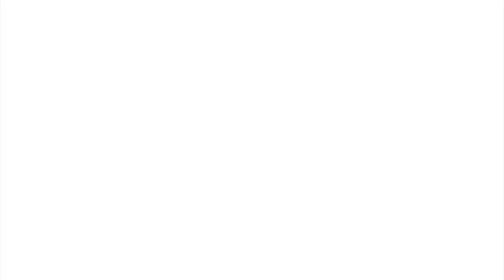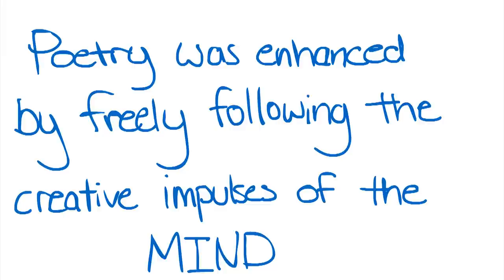A majority of the literature movement can be divided into English and German writings. English Romantic writings favored poetry and believed that it was enhanced by freely following the creative impulses of the mind. This now redefined poetry, thought to be merely an exercise of the mind, as an important expression of the mind.